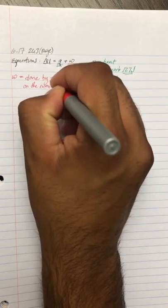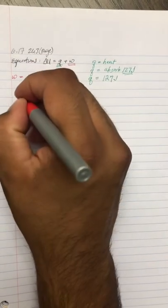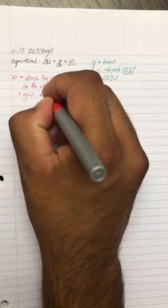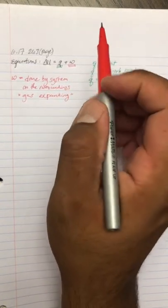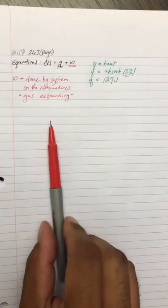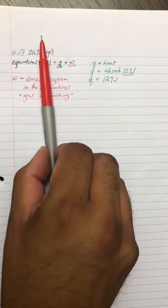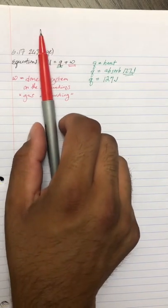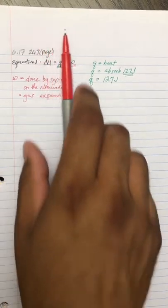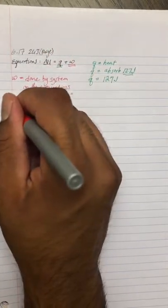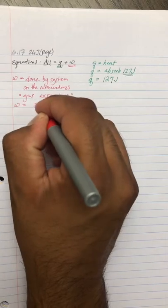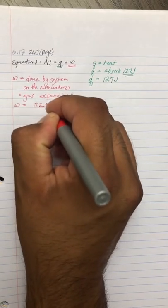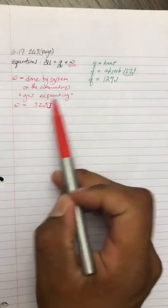Because the gas is expanding. So therefore, again on table 6.1, if the gas is expanding, that means it's going up this way on the piston. That means it's doing work against the surroundings. So therefore your sign is going to be negative. In this case, the work is going to be 325 joules, but because it's doing it on the surroundings and by the system, it's going to be negative.